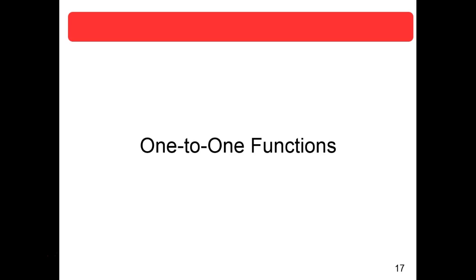Any other questions before we get going? Last time we were in section 1.9 — Chapter 1 is still functions and graphs, and 1.9 is inverse functions. For a function to have an inverse, it has to be a one-to-one function. That's what we're going to talk about now.